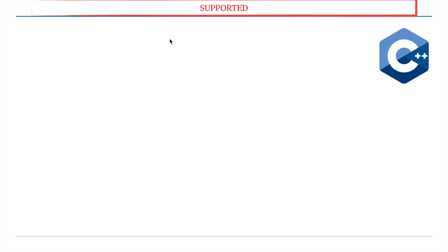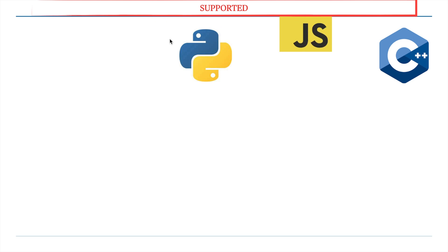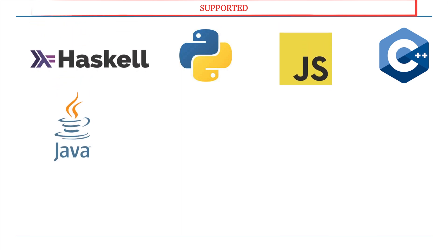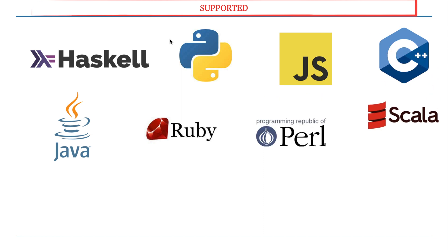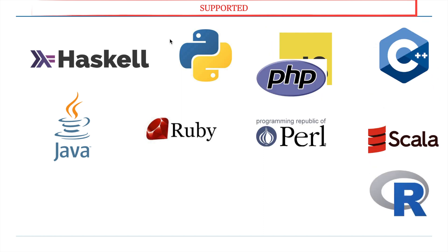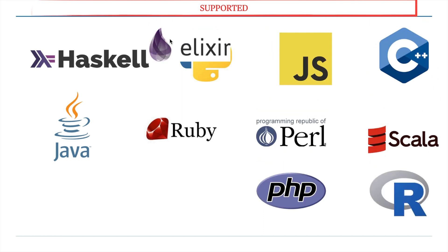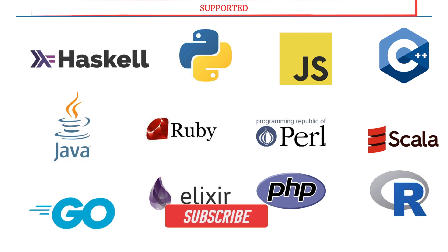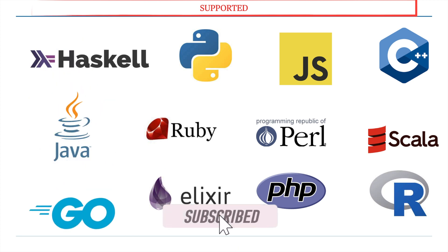GraphQL supports many programming languages including C++, Python, JavaScript, Haskell, Java, Ruby, Perl, Scala, R, PHP, Elixir, and Go. There are many more languages supported, but in this entire tutorial series we are going to focus on Python-based GraphQL.